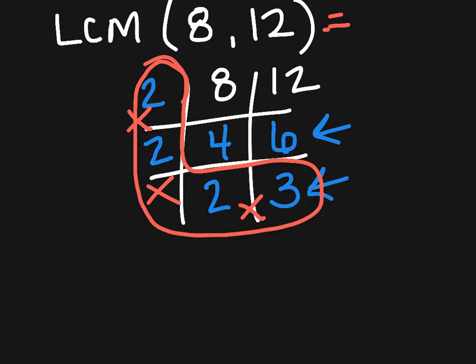So my least common multiple is 24. And that's how you find the least common multiple using the grid method.